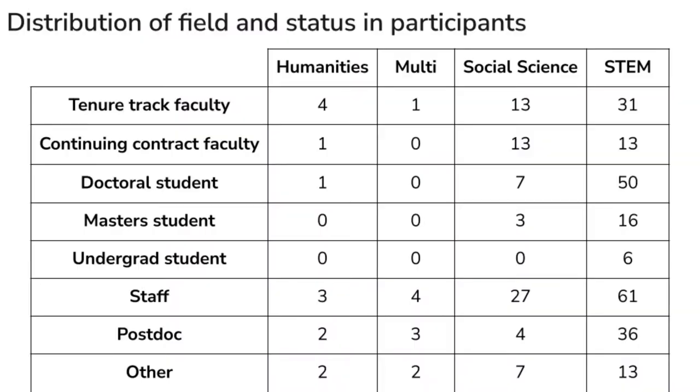Now some information about our participants. We asked survey respondents about their role at their current institution, length of time in that role, discipline or area of study, type of institution, whether or not they get funding, and similar questions. It was really interesting to see that a lot of our participants were actually staff more so than any other category, which speaks to who does what.